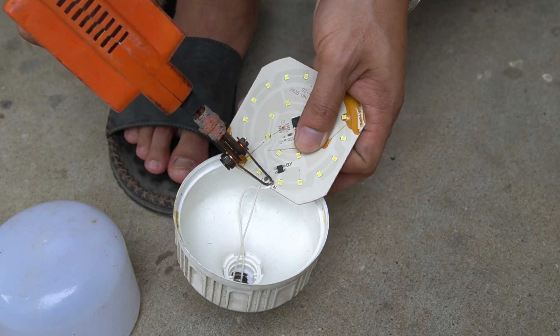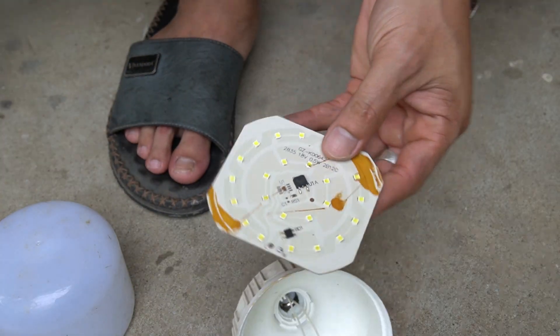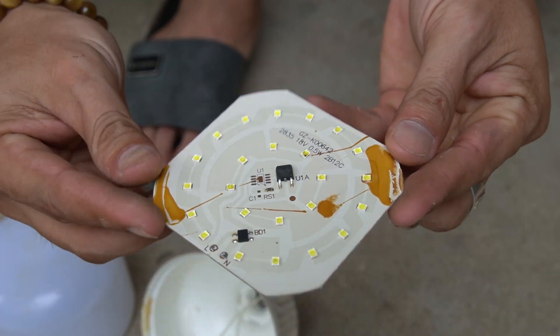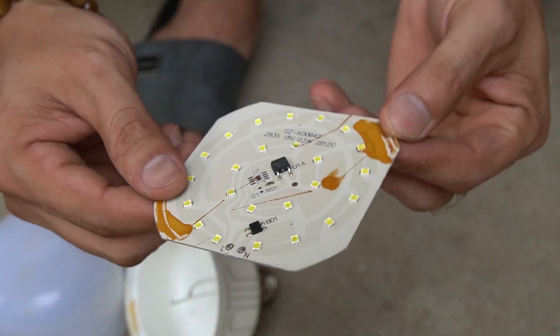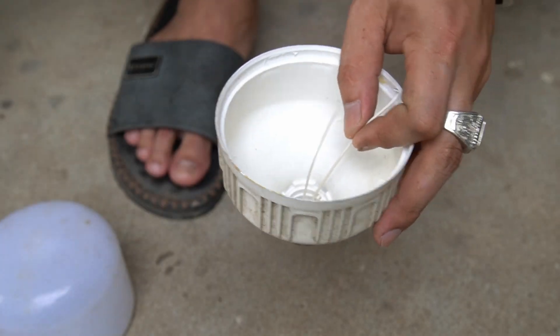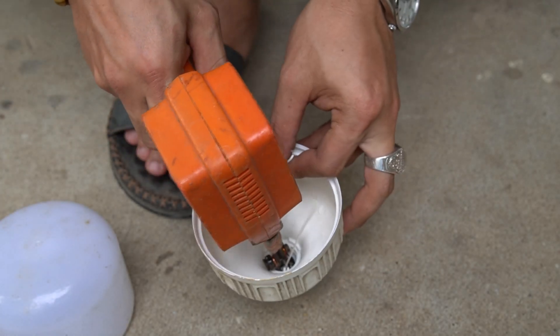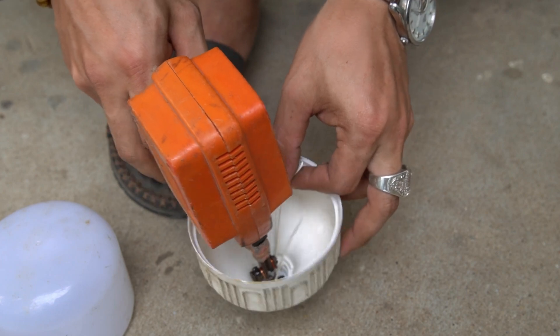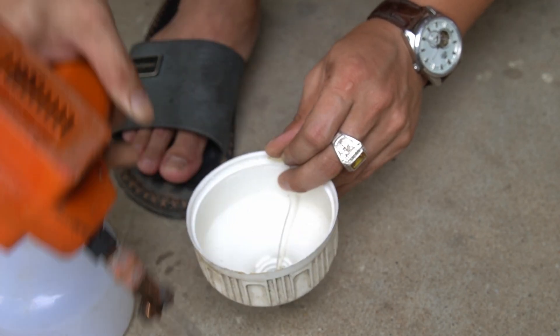I used a soldering iron to remove the wires from the LED bar. The reason the bulb is broken and the LED bulb does not light up is due to the capacitor. I will remove the two wires from the bulb to use for the new bulb.